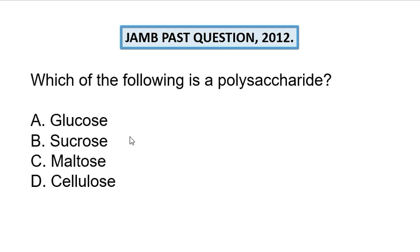An example of a disaccharide is sucrose, formed by glucose plus fructose. We also have maltose, which is formed by glucose plus glucose. Whereas cellulose is a polysaccharide and it contains many chains of monosaccharides — more than 20 exactly.